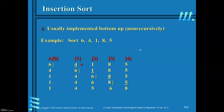Insertion sort is an example of decrease and conquer. It is implemented using a bottom-up approach non-recursively. Given these elements 6, 4, 1, 8, 5, you are required to sort these elements in ascending order by applying insertion sort.